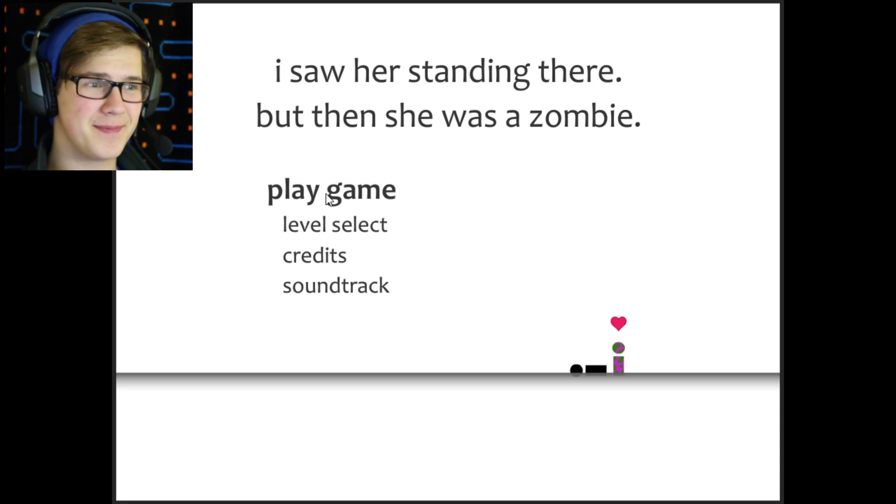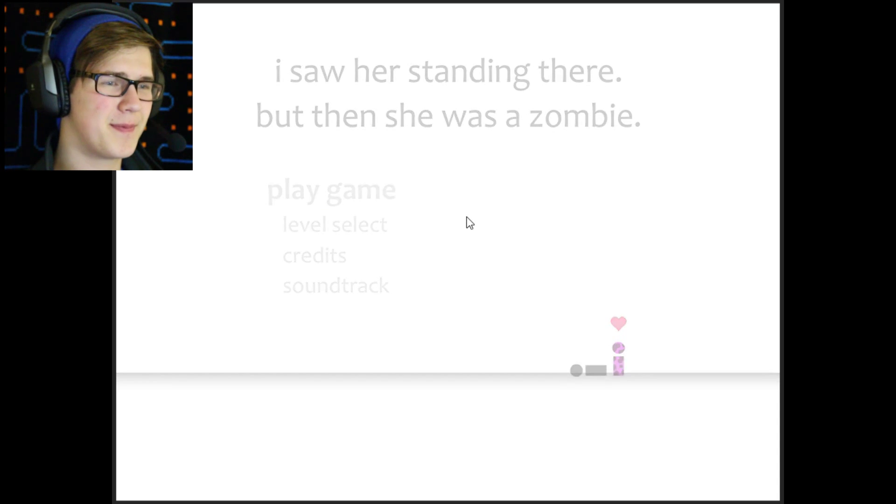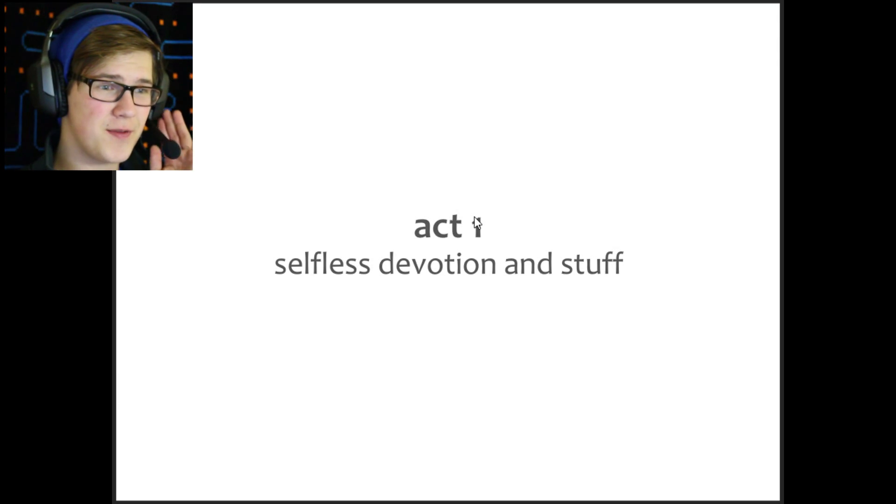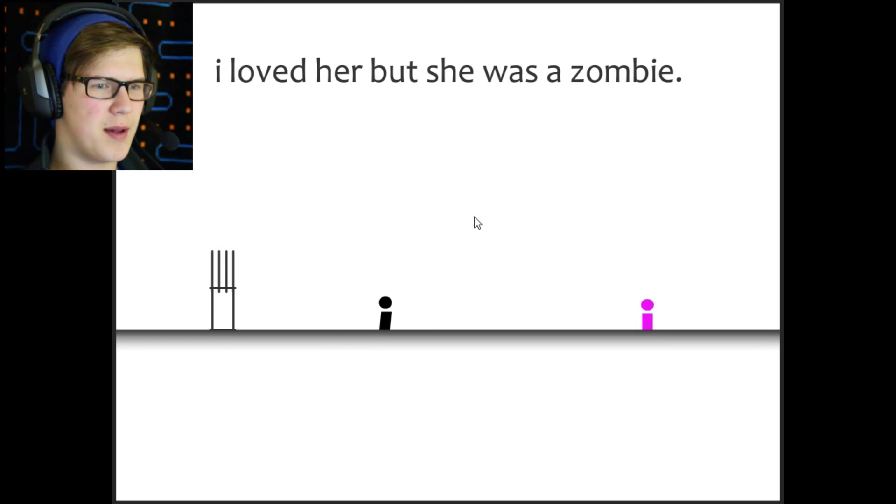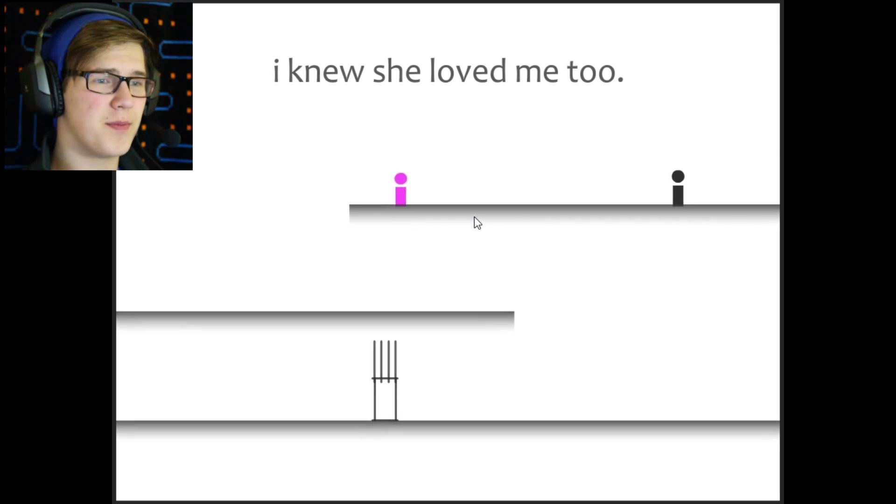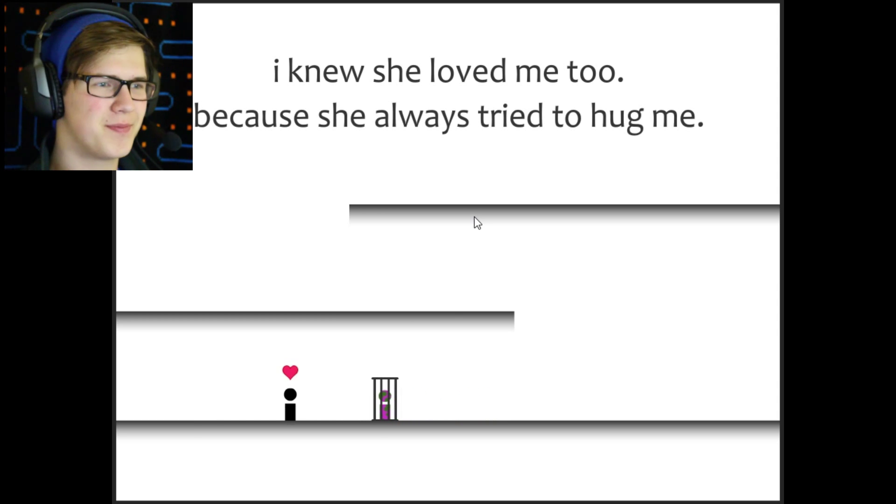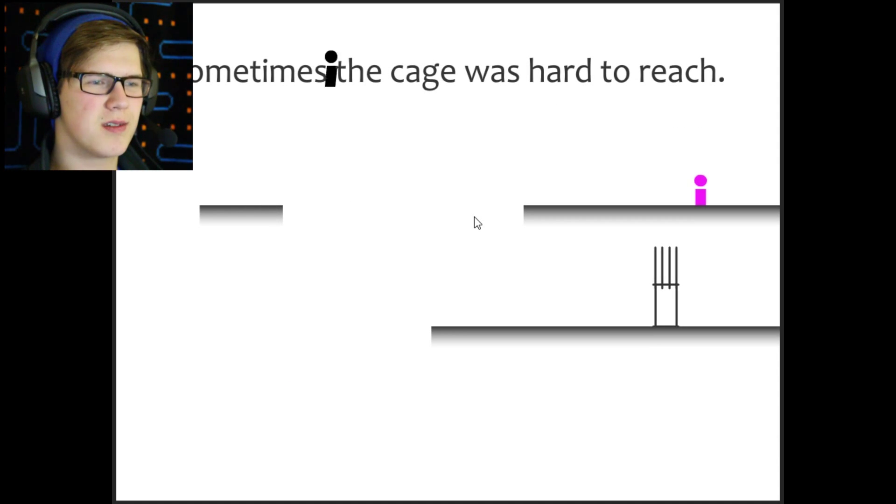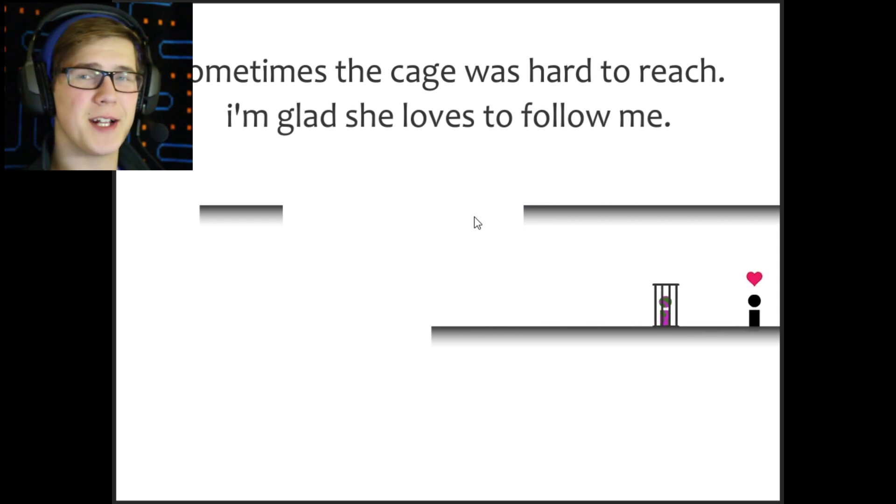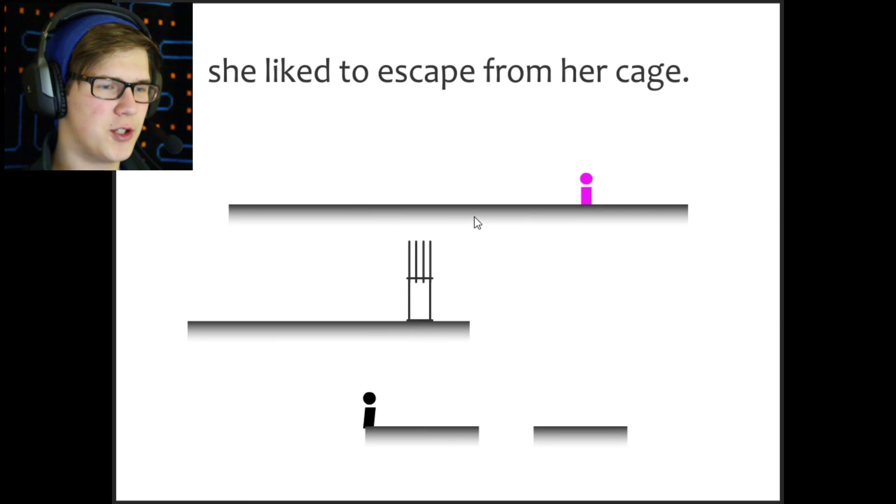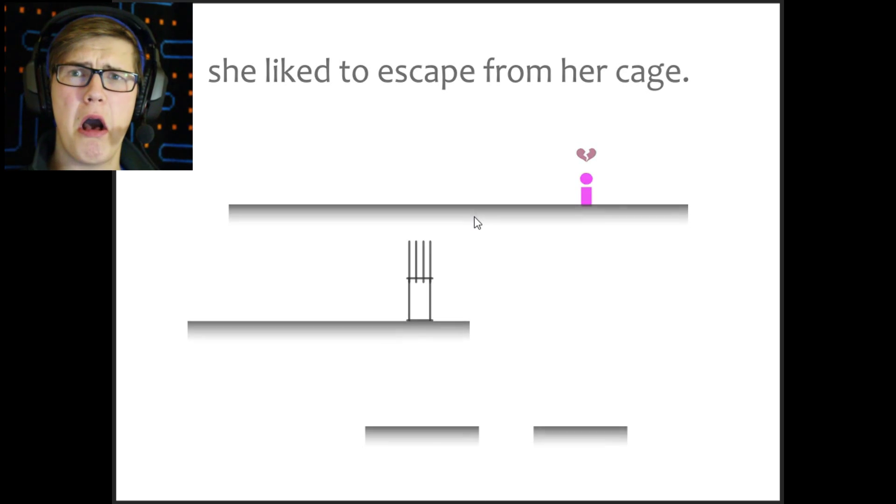But then she was a zombie. This music's delightful. Act 1: Selfless devotion and stuff. I loved her. She was a zombie. This is adorable. So I put her safe in the cage. I knew she loved me too. She followed me everywhere I go. That's a true sign of love when somebody follows you everywhere. She always tried to hug me. Sometimes the cage was hard to reach. I'm glad she loves to follow me. She liked to escape from her cage. Oh God! Oh, I broke her heart. I'm sorry.